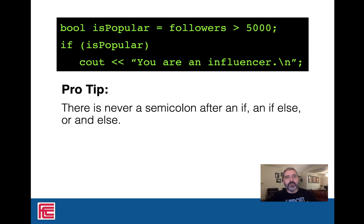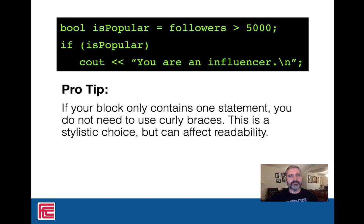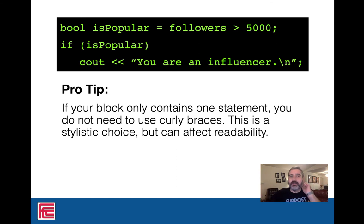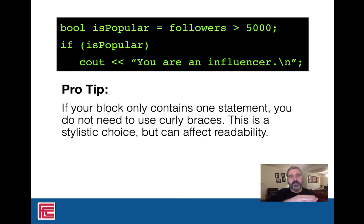Notice there's never a semicolon after the if, else, or else-if keywords. Normally you put curly braces after the if to define a block of code — if you accidentally put a semicolon after the if, you've created an empty block and the next line will execute regardless. Also, if you only have one line of code inside an if, you don't need curly braces — only that first line is protected. A second line, even if indented, would execute regardless, because whitespace means nothing in C++. That's why we use curly braces.